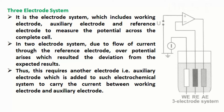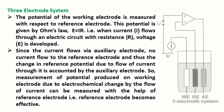Three-electrode system is the electrode system which includes working electrode, auxiliary electrode, and reference electrode to measure the potential across the complete cell. The auxiliary electrode is also often called counter-electrode. In a two-electrode system, due to flow of current through the reference electrode, over-potential arises which results in deviation from expected results. Thus, an auxiliary electrode is added to the electrochemical system to carry the current between the working electrode and the auxiliary electrode. The potential of the working electrode is measured with respect to the reference electrode.